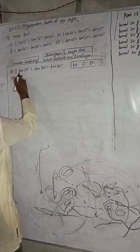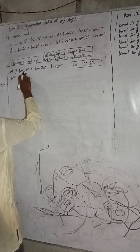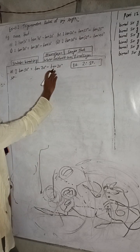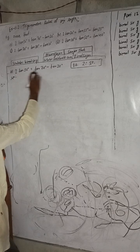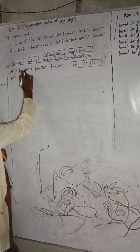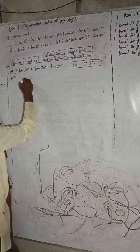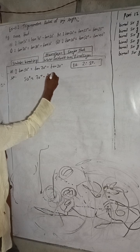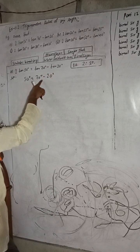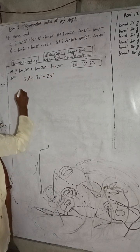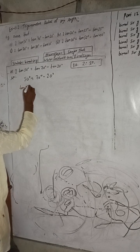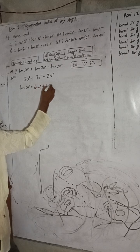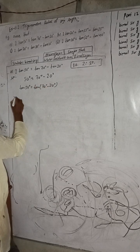Now solution. To prove: 2·tan50° = tan70° − tan20°. We need to prove this. On the RHS, note that 50° = 70° − 20°, so we can write tan50° = tan(70° − 20°). Now take tan on both sides. So tan50° = tan(70° − 20°). Now apply the tan(A − B) formula here.